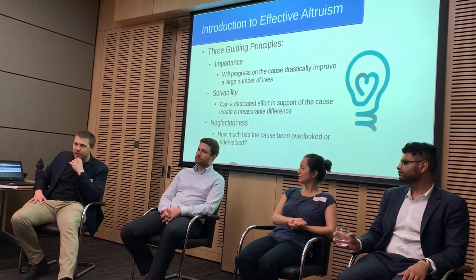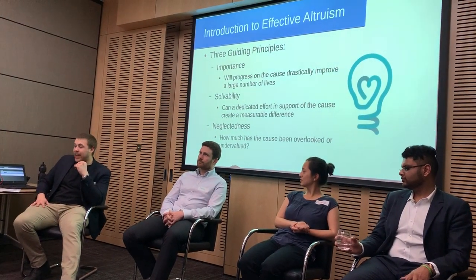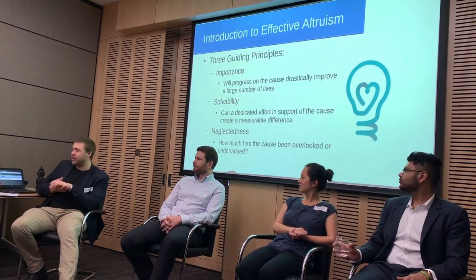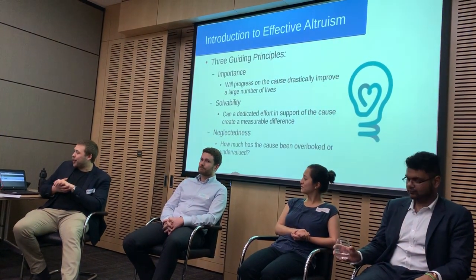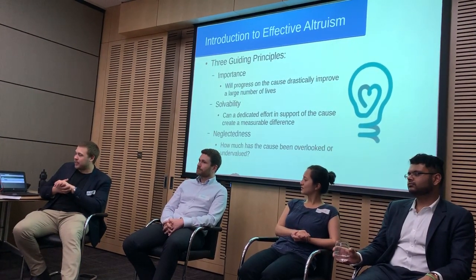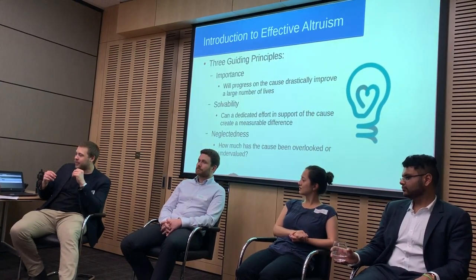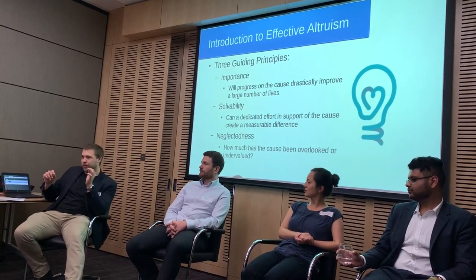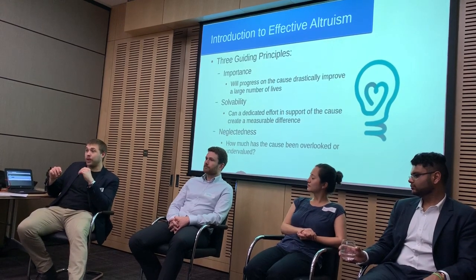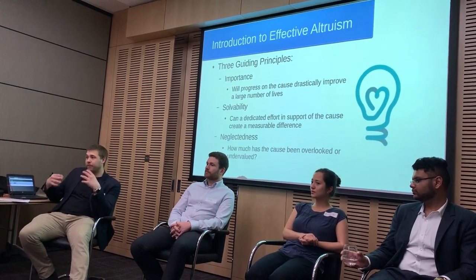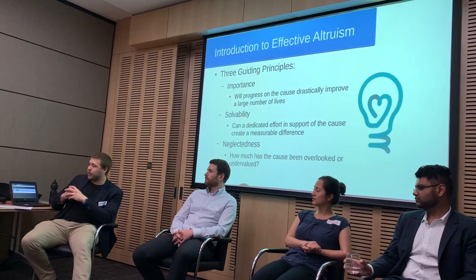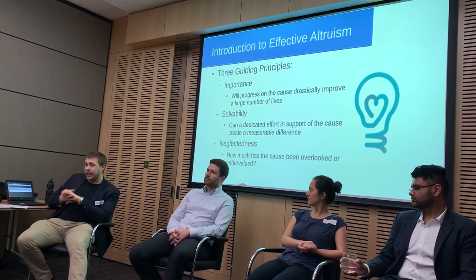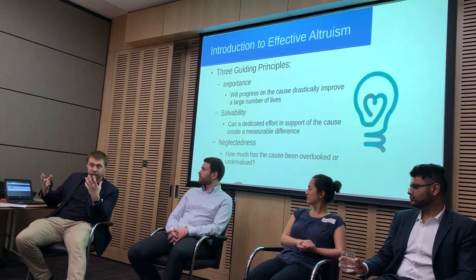If you read the EA website last year, it would have been scale, tractability, and neglectedness — but they've changed the words, and so have we. Importance correlates to scale, meaning this cause will drastically improve many, many lives, or improve lives a very great deal if we're able to achieve change in it. Solvability — that's tractability — refers to whether or not a dedicated effort will actually be able to effect change.